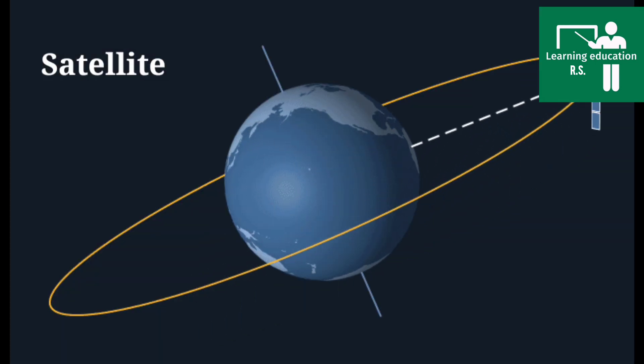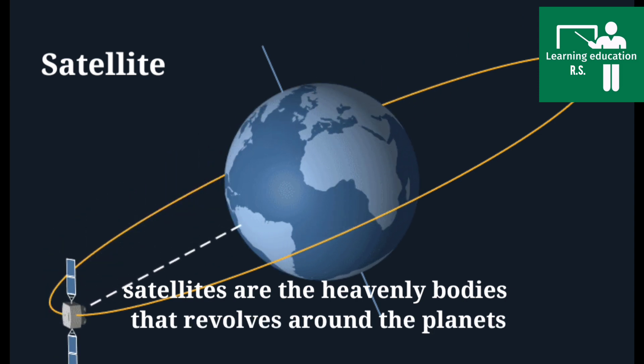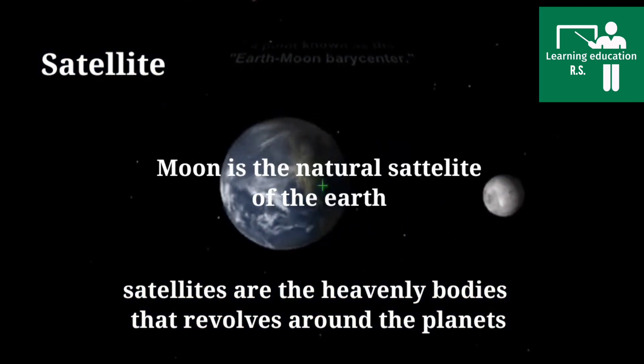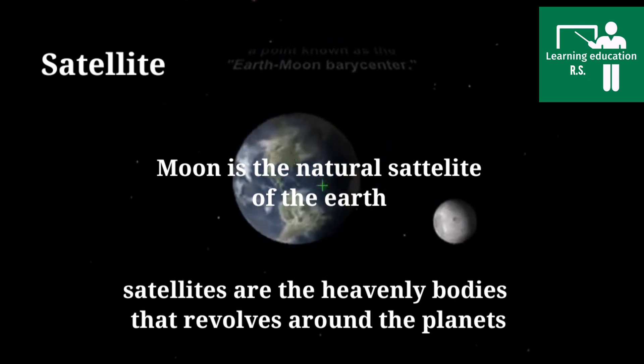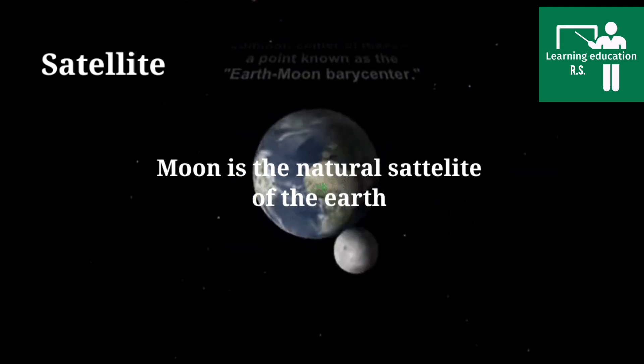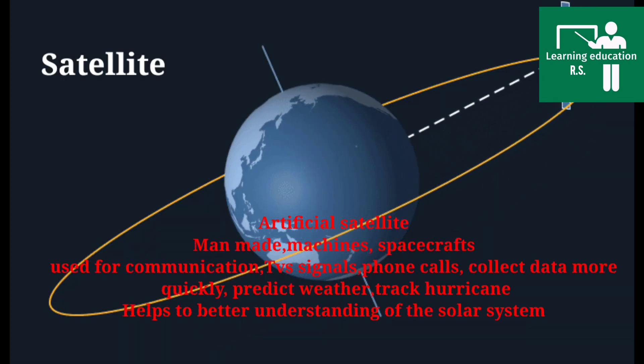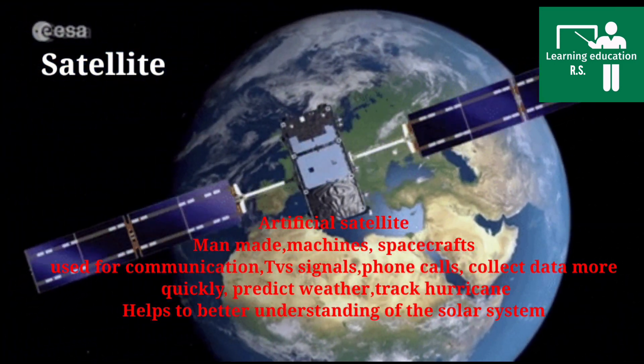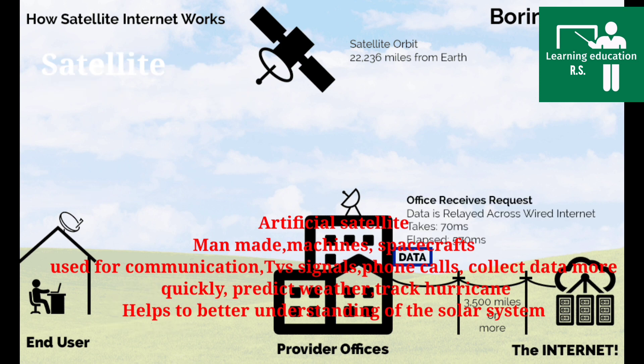Earth's moon is a natural satellite. Artificial satellites help us better understand the solar system. We can use satellites for communication, TV signals, and phone calls around the world. We can collect more data from space.